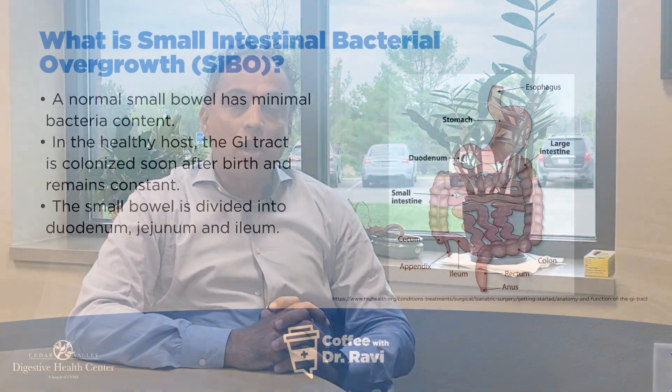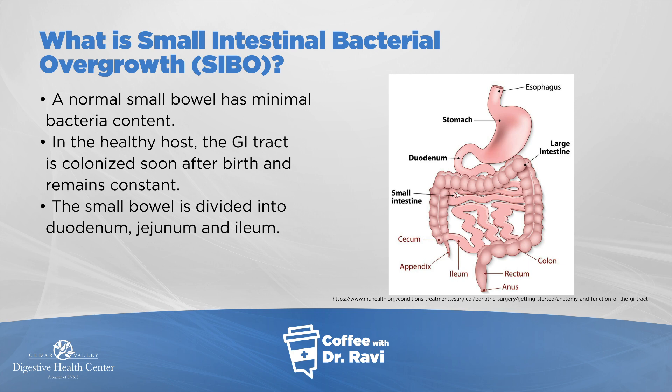The small bowel is divided into duodenum, jejunum and ileum. It sits in between the stomach and the colon and is a long tubular structure that's really packed tightly. The colon, as opposed to the small bowel, has literally trillions of bacteria in it.